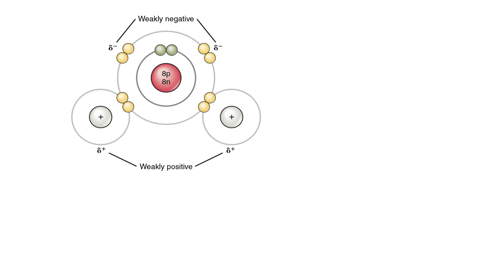Now these charges are not ionic in nature. They are not permanent. So we say that they are partial charges, and in fact they are very, very weak charges. But we say that the oxygen side is partially negative in charge, and the hydrogen side is partially positive in charge.